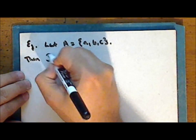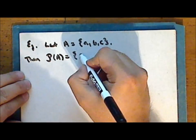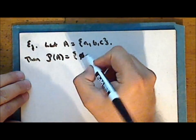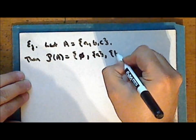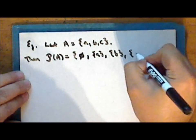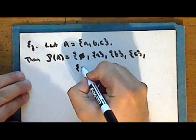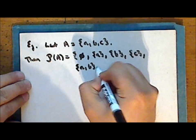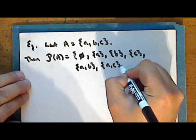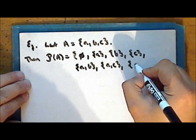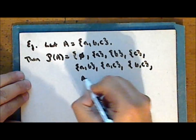Then the power set of A is the set which contains the empty set, the singleton set containing A, the singleton set containing B, the singleton set containing C, the set containing elements A and B, the set containing elements A and C, the set containing elements B and C, and the entire set A.